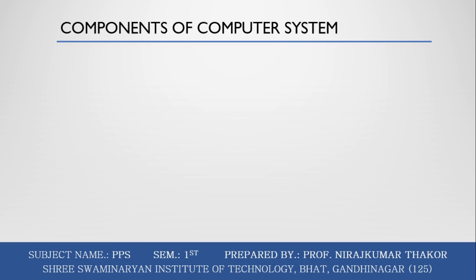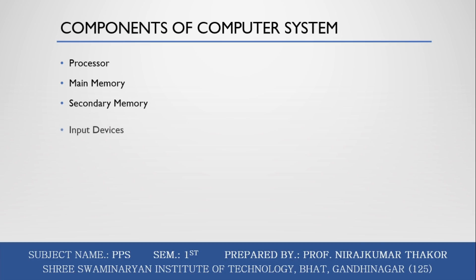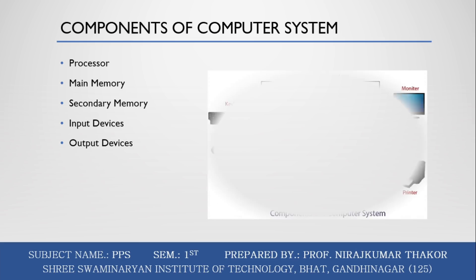The components of the computer system are: processor, main memory, secondary memory, input device, and output device. These are the five main components of a computer system.